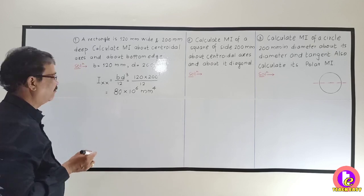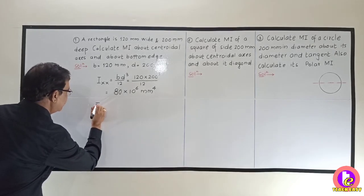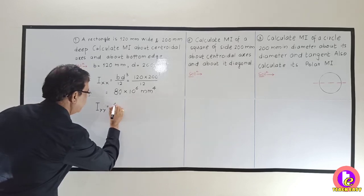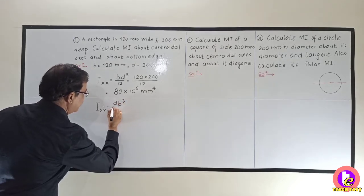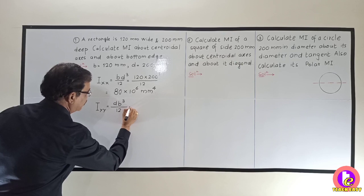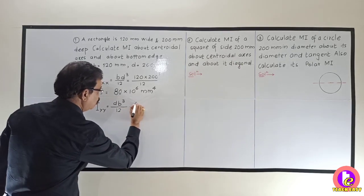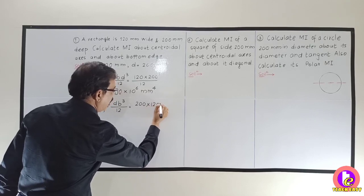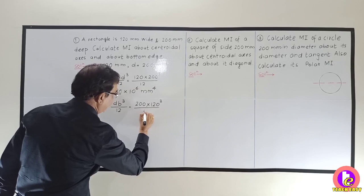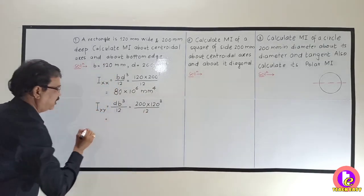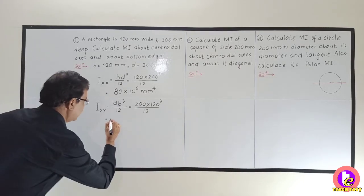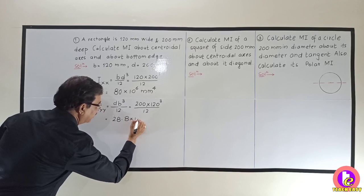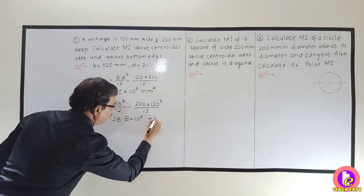Now let us go for IYY. The formula for the Vertical Centroidal Axis — you simply interchange the places of B and D — so it will be D into B cube divided by 12. Substituting the values: D is 200 into B is 120, cubed, divided by 12. Using the scientific calculator, the value of IYY equals 28.8 × 10⁶ mm⁴.